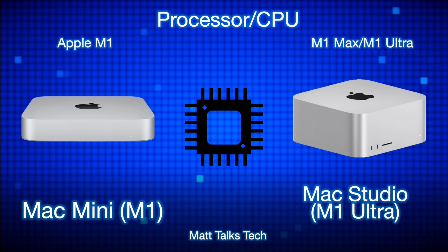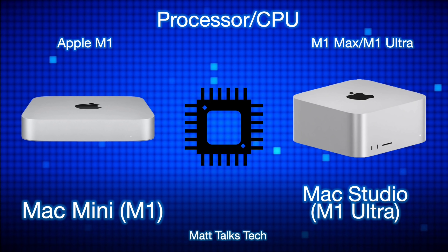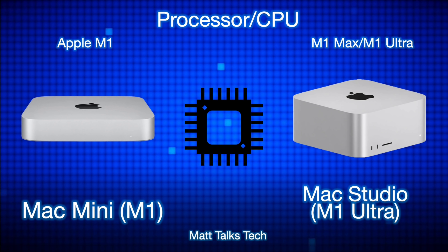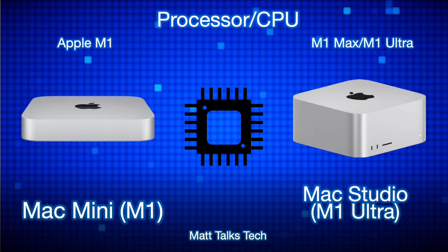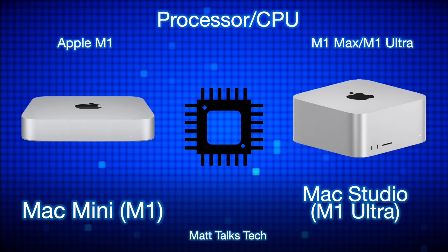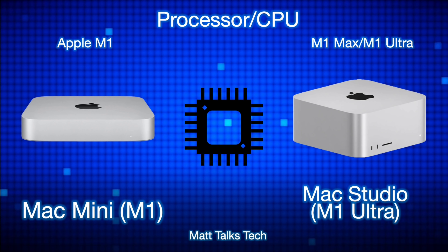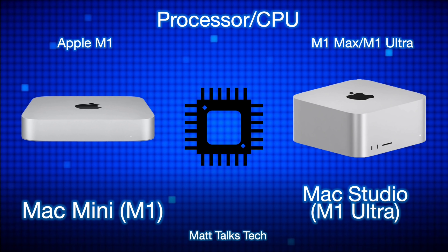The M1 Ultra offers a 20-core CPU option with four efficiency cores and 16 performance cores. It can also be configured with 64 GPU cores, compared to the M1's 8 — that's eight times the GPU cores, which is absolutely staggering in terms of performance.